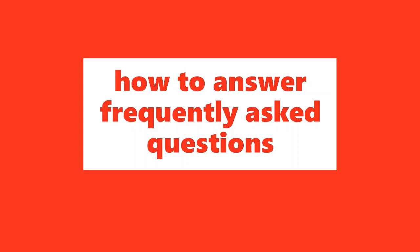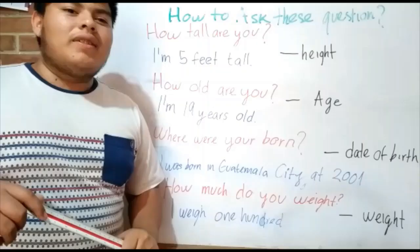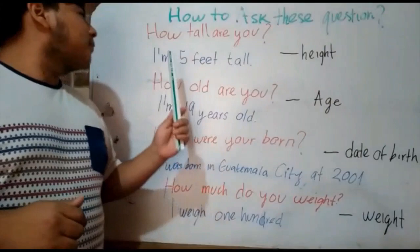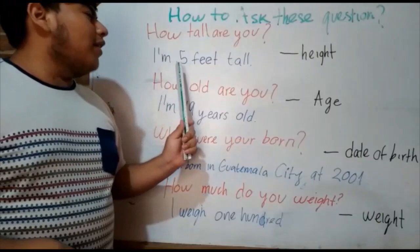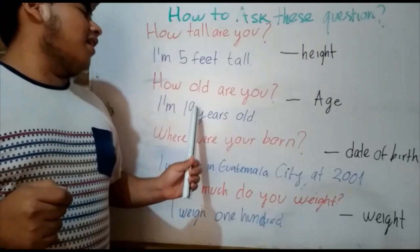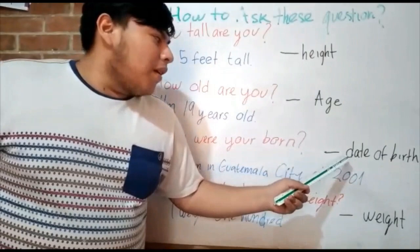How to answer frequently asked questions. For example, how tall are you? I am 5 feet tall. How tall are you? I am 19, 19 years. Date of birth.